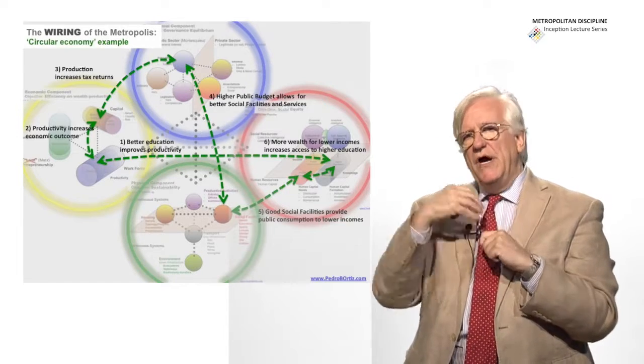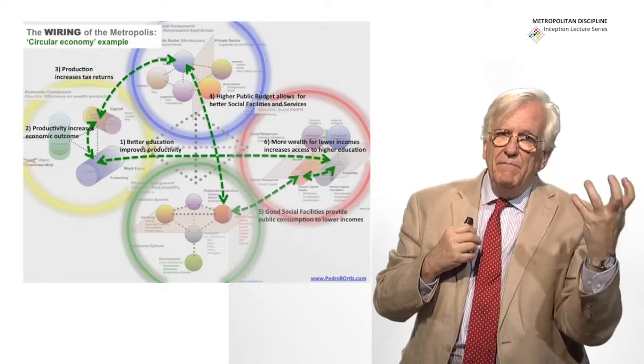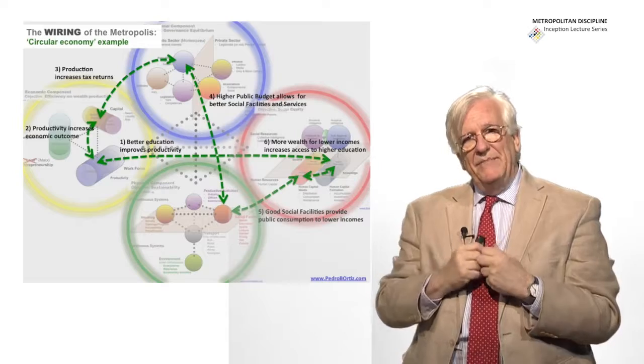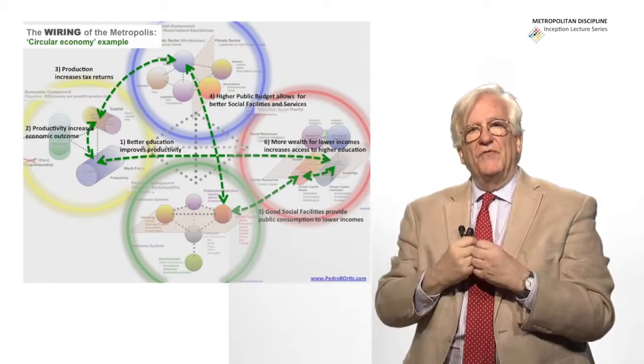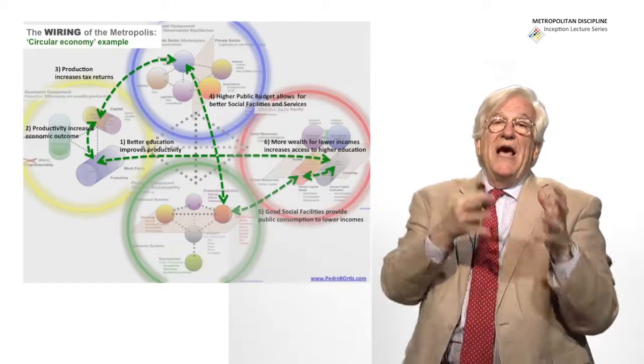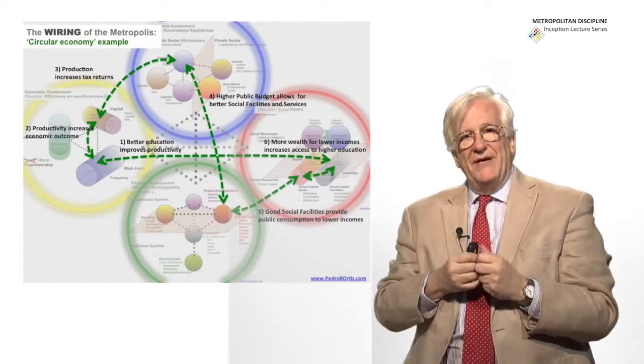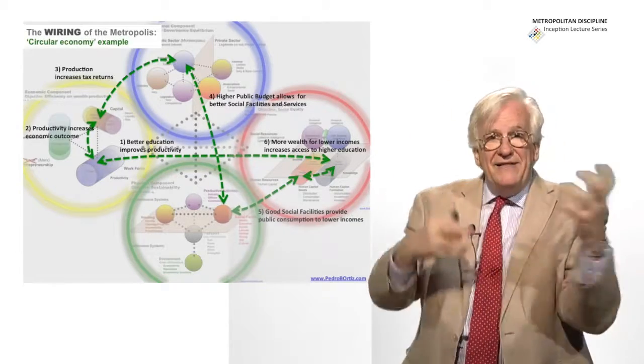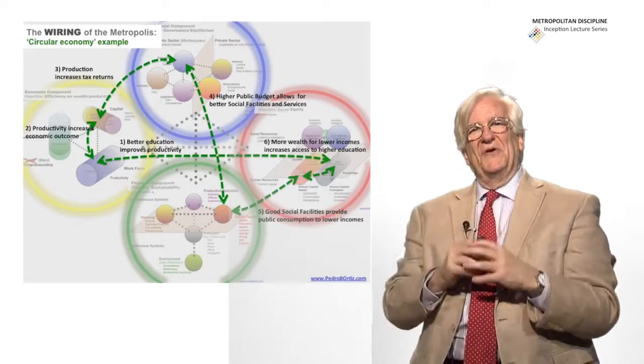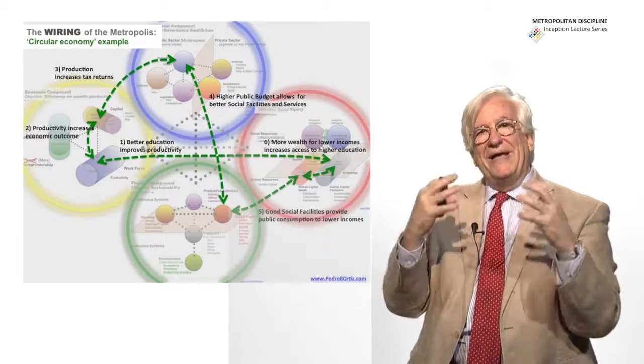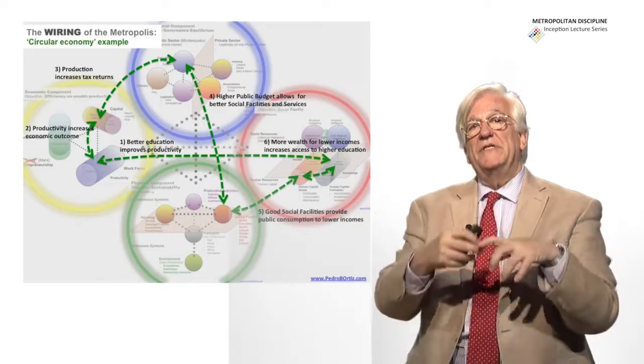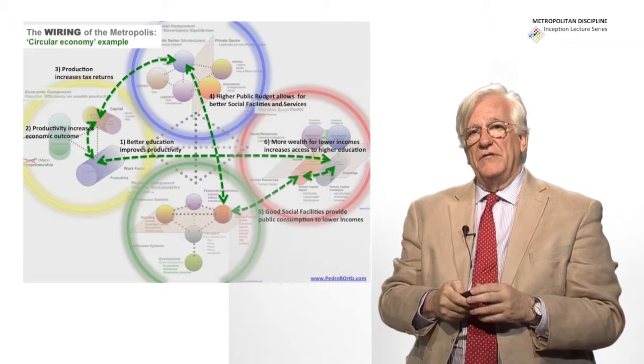We saw how an increase of education will make more efficient the economy, a more efficient economy will be able to pay higher taxes, higher taxes will be able to provide social facilities in the physical environment, more universities, more schools and so on, and how that will improve the capacity of the education of the population. And then the circular economy now is a word very much in fashion, but in this case is used in another context. The circular economy has the implications of the decision of the decision maker of the metropolis all around, even if it's just from the physical component.